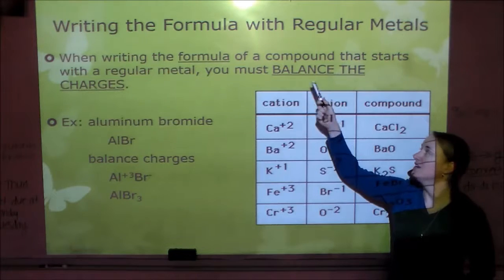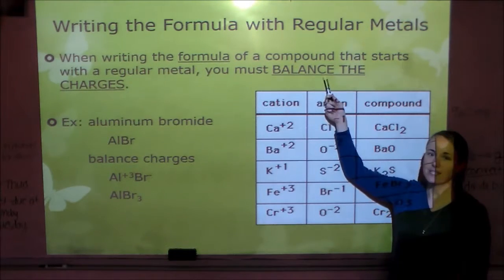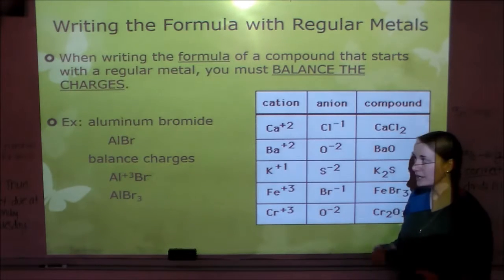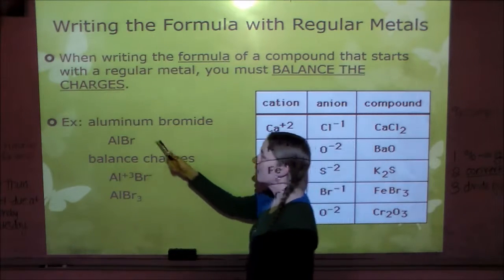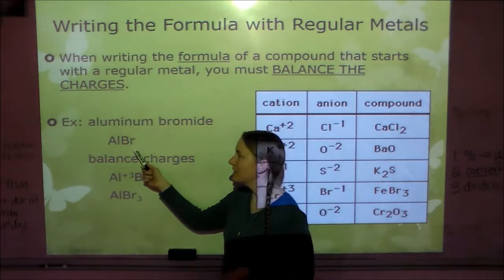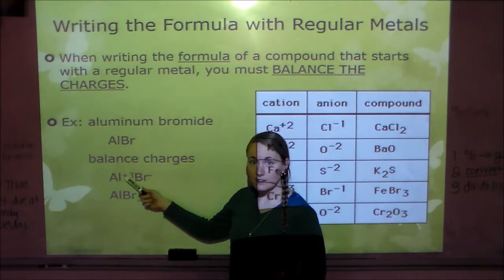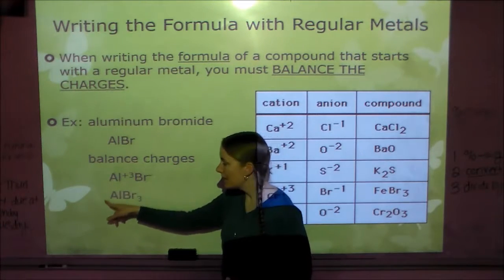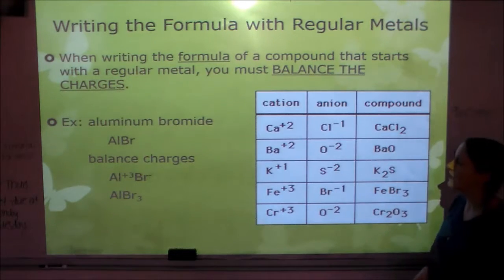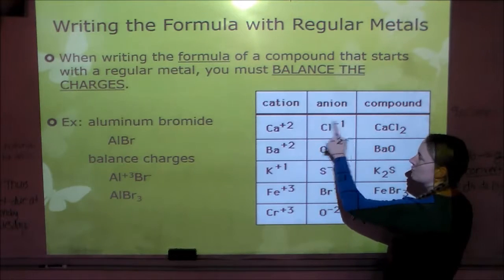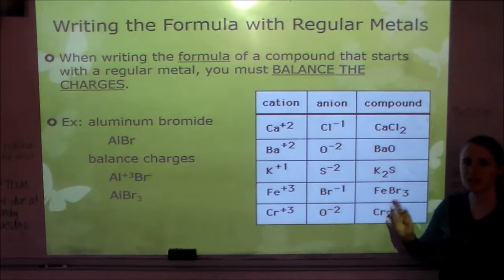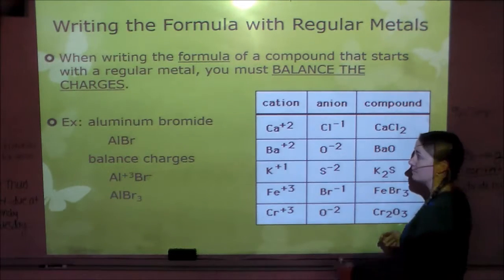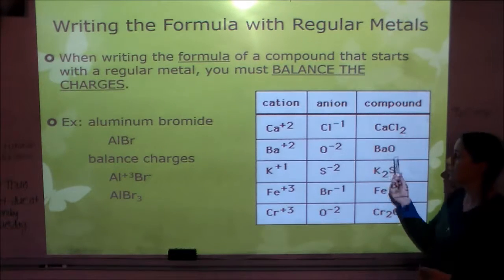When you write the formula of a compound that starts with a regular metal, you must remember to balance the charges. You will miss more things throughout this whole year because you forget to do this than almost anything else. We learned how to balance charges in chapter 7 already. For example, if I have aluminum bromide and you just write AlBr — that's not right, you didn't cross your charges. Aluminum is in group 13 with a charge of +3, bromine is in group 17 with a charge of −1, so we cross the 3 down to get AlBr₃.